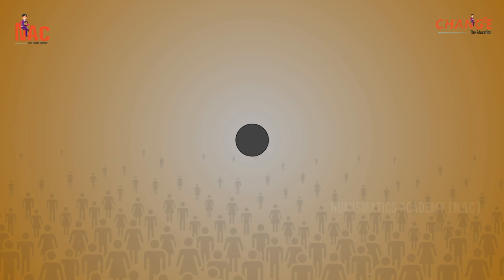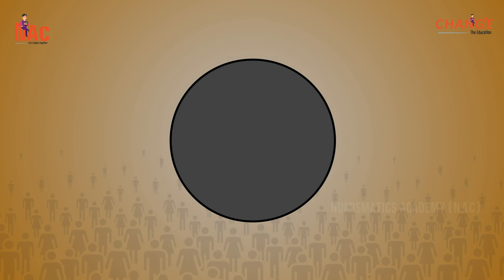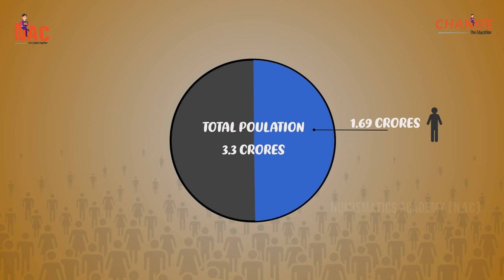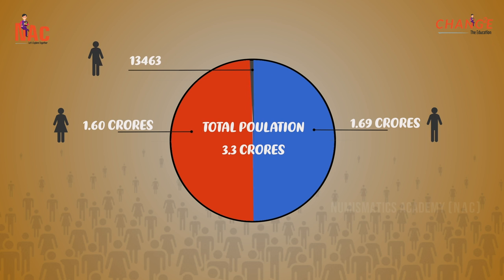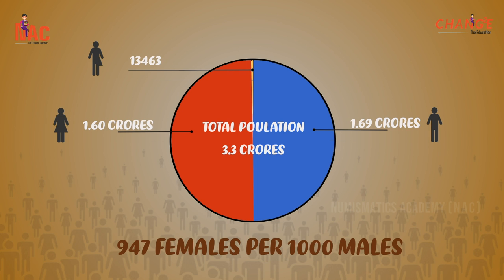The total population of the state is 3.3 crores. The male population is 1.69 crores, the female population is 1.60 crores, and the transgender population is 13,463. There are 947 females per 1,000 males in the state.